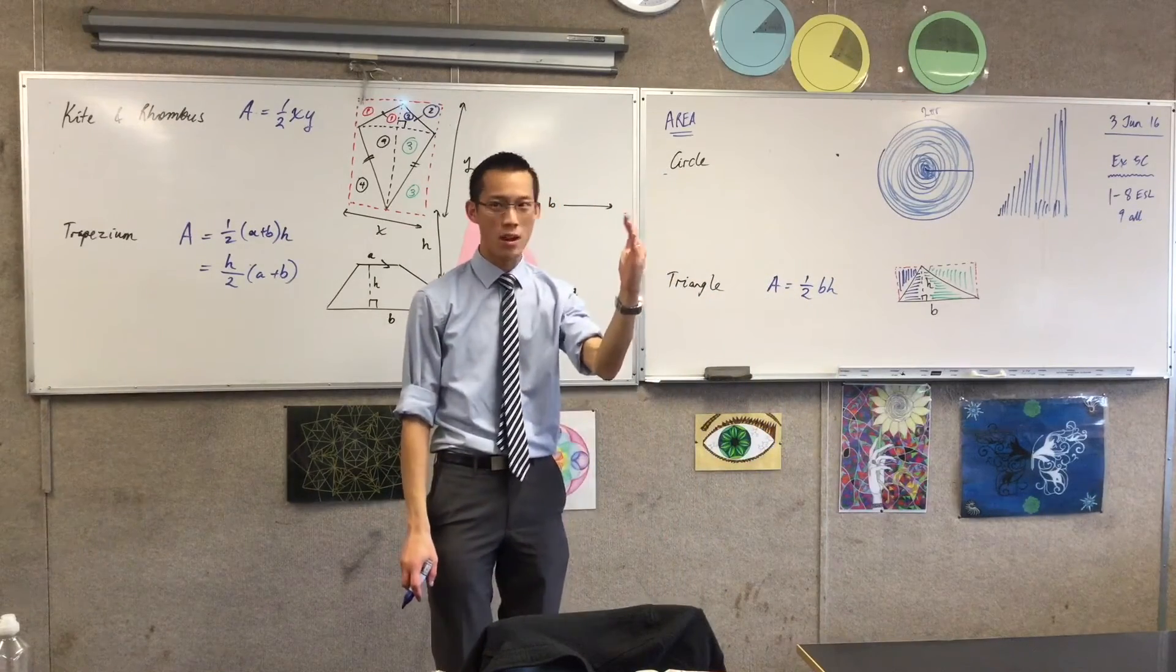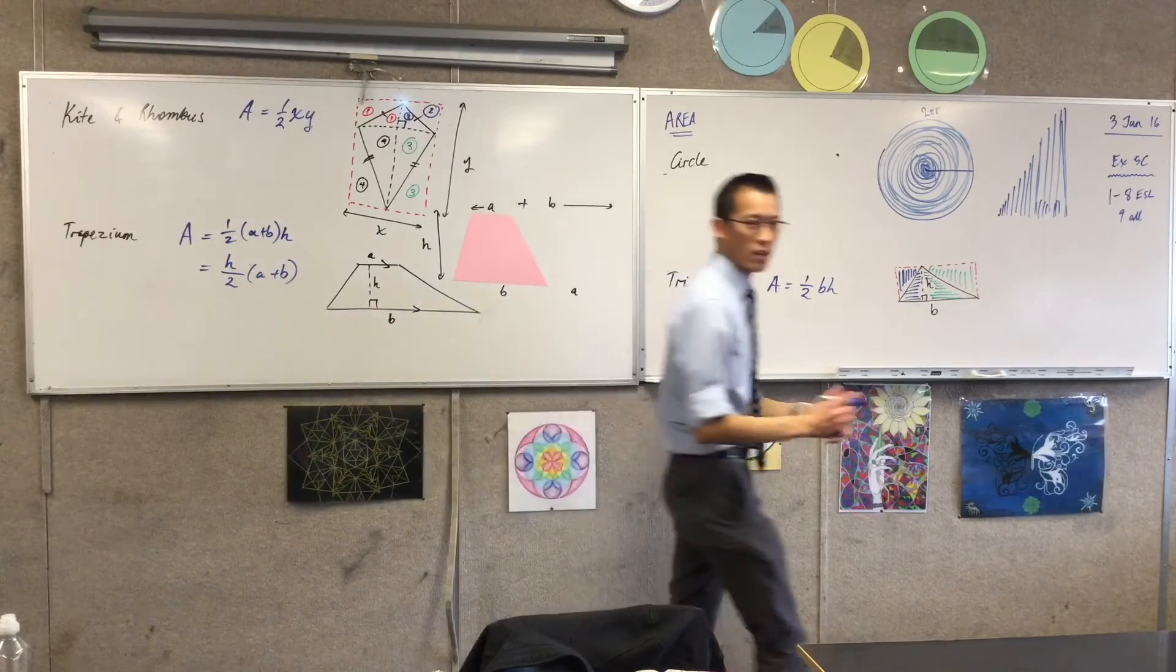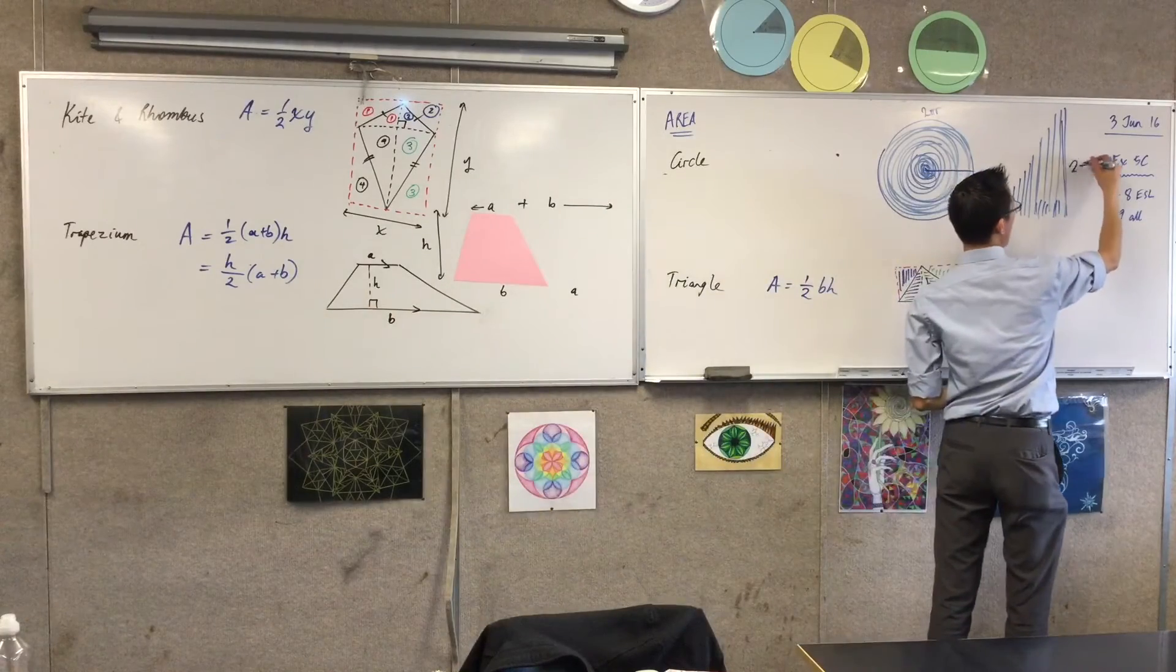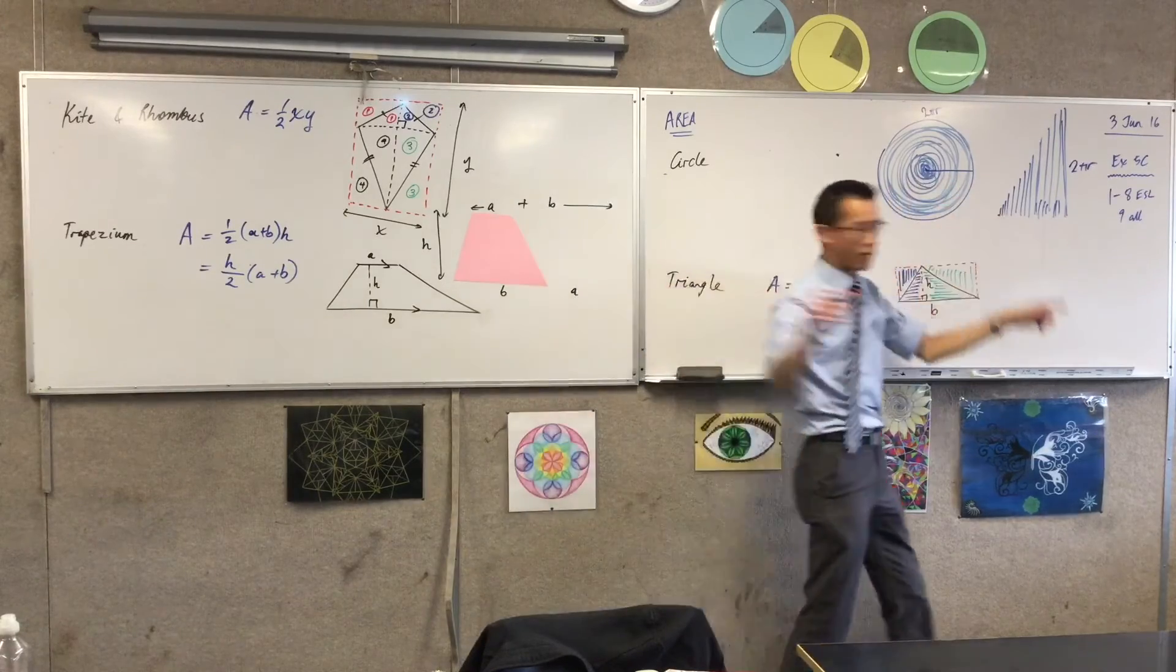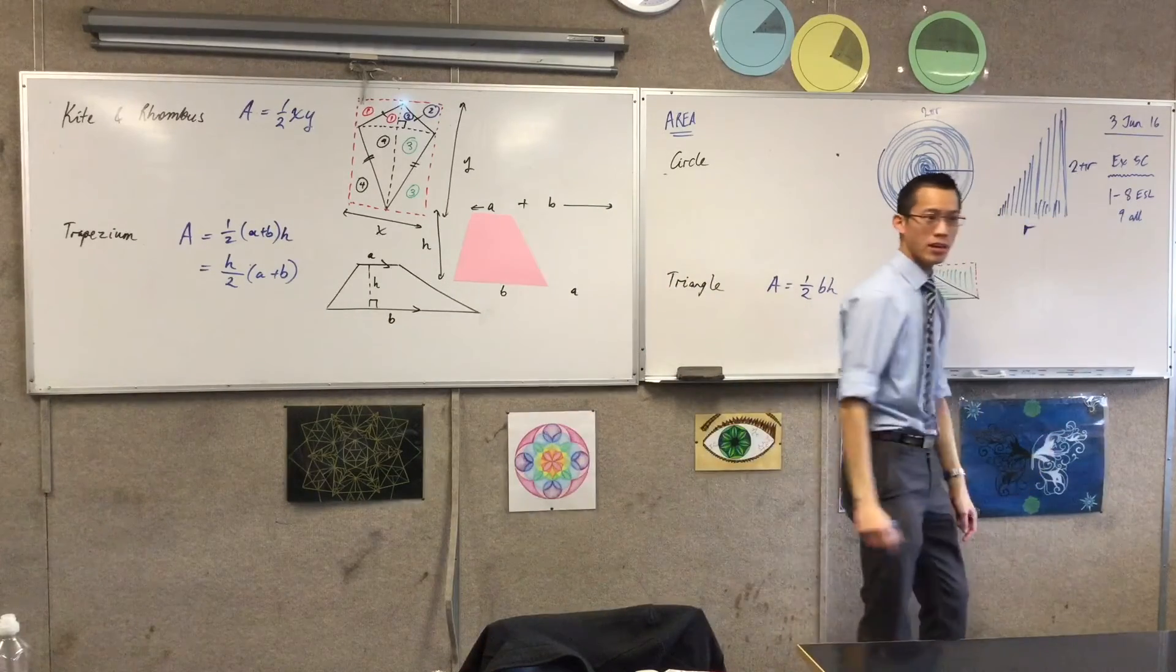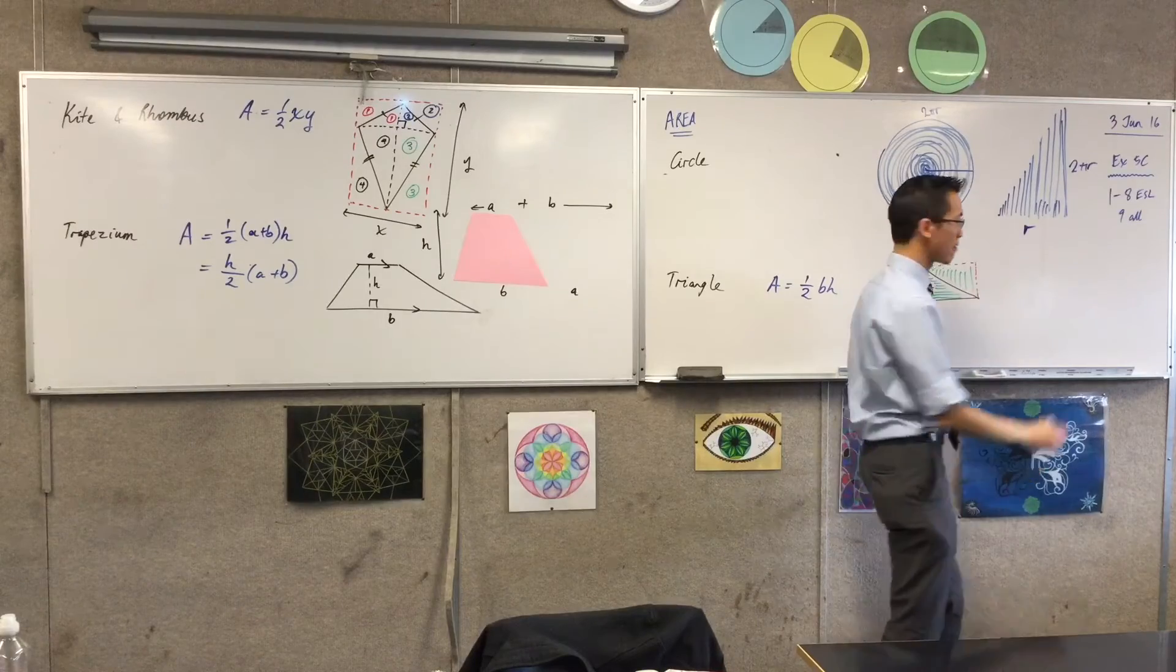How long is it again? It's 2πr. Now hold on, which way did I cut this? Which way did I cut it? By the radius. I cut it along the radius, right? Yeah, sure.